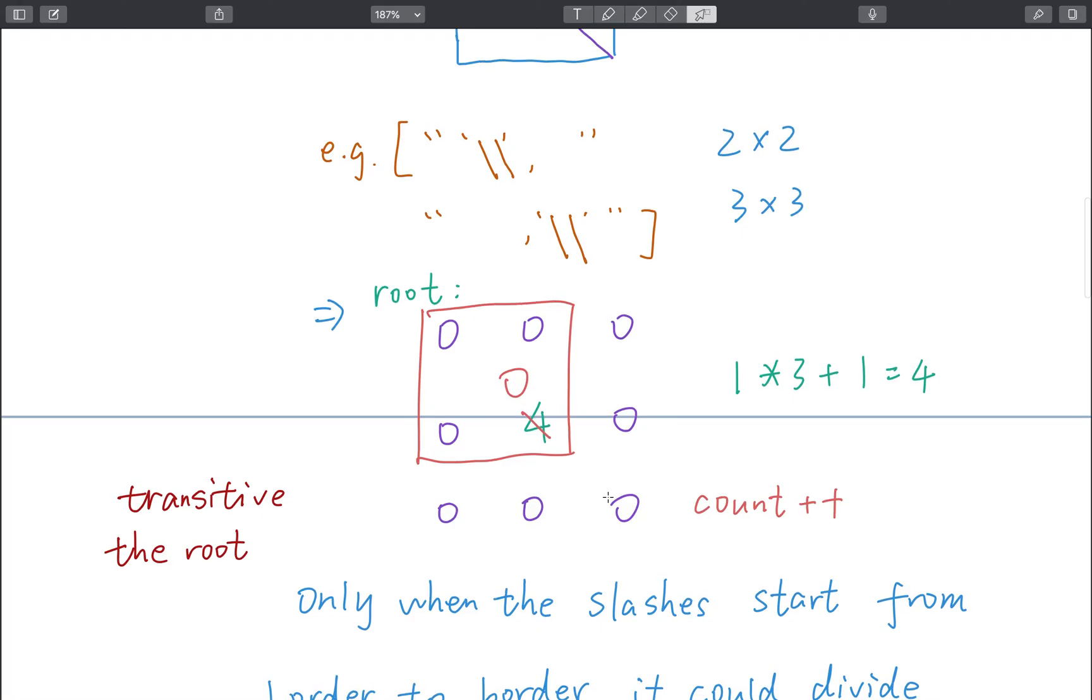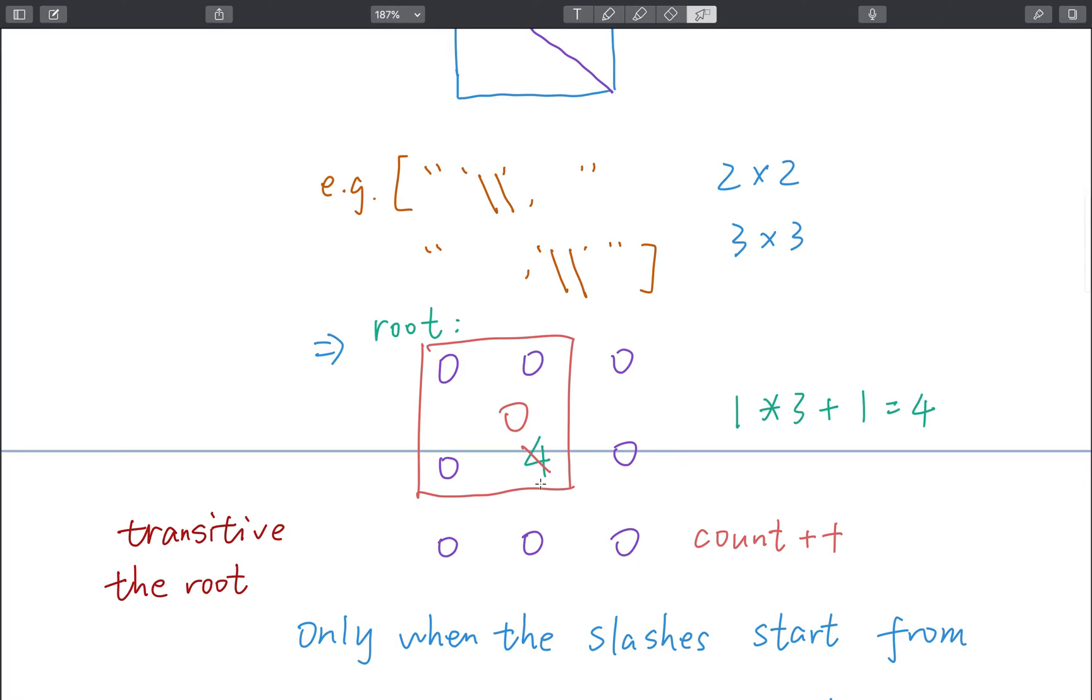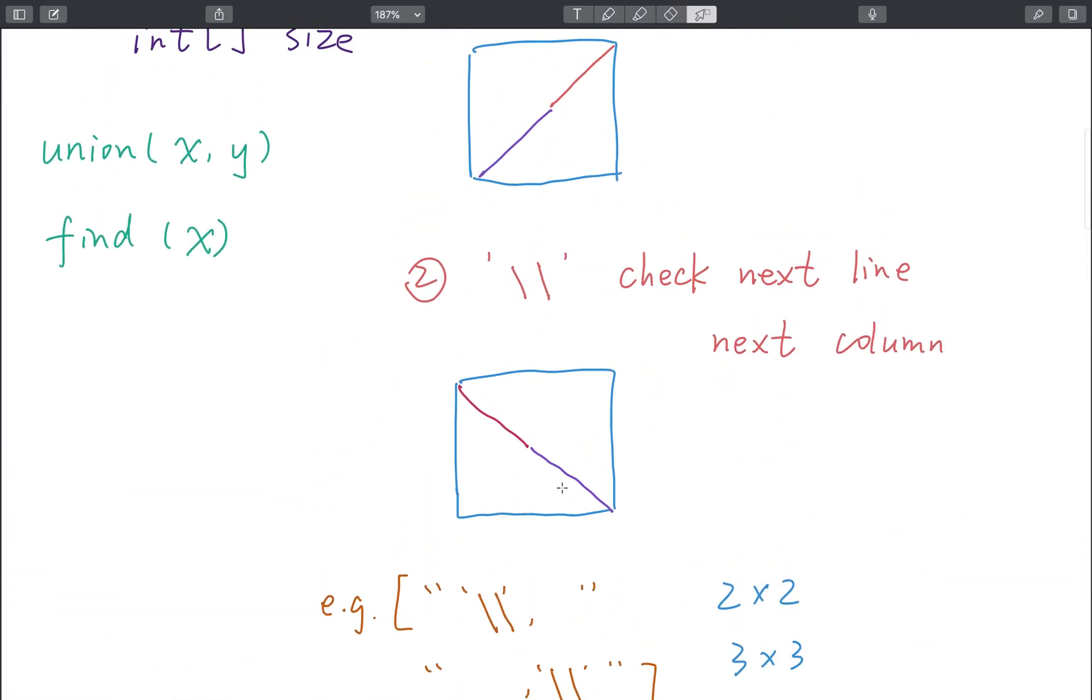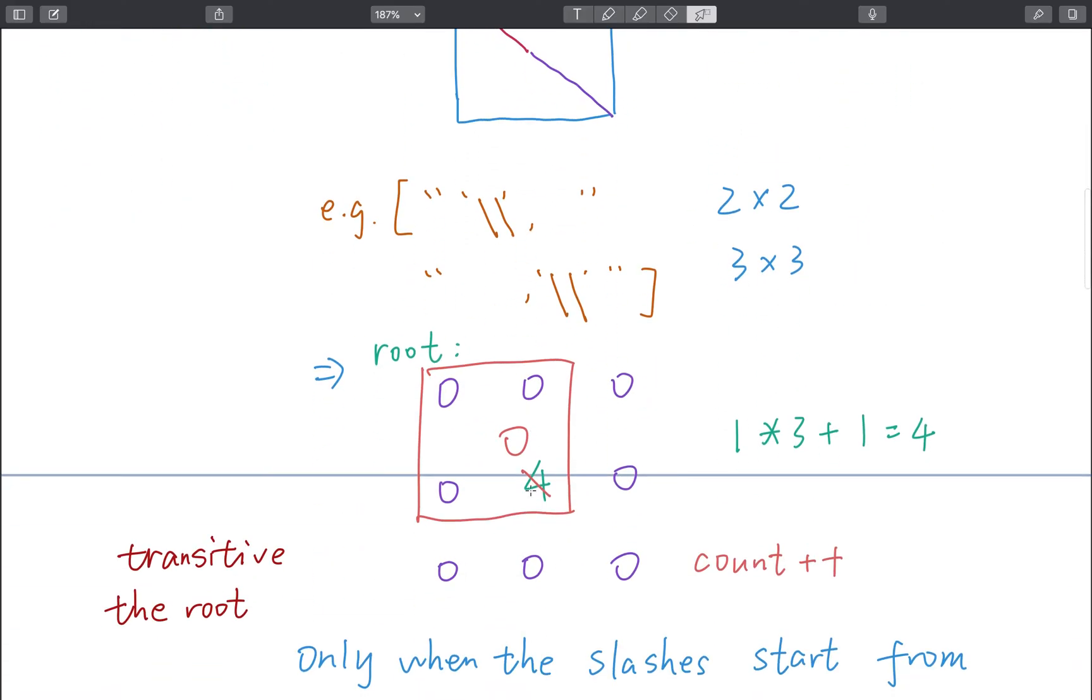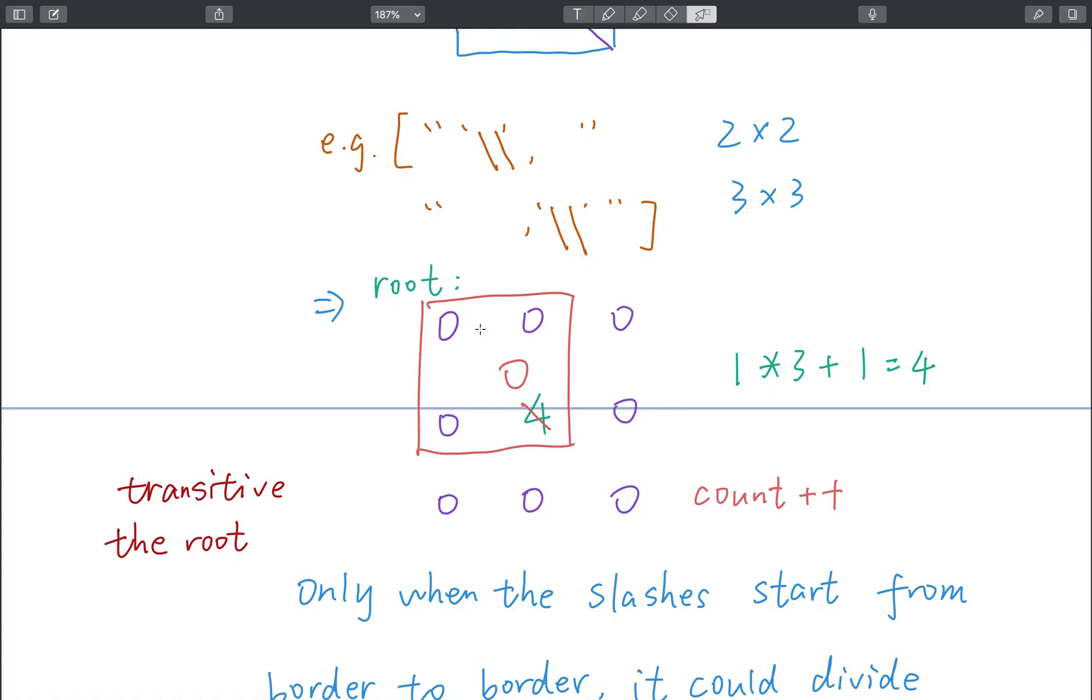It seems we need to set root size equal to n times n, but if we initialize the root to n times n we may have some problems. One thing is that we always need to check whether the index is valid. Like here, we need to check next row, next column, whether the index is valid. Another thing is for the root initialization we may have some issues because we need to know whether they are connecting in the continuous way. If we initialize the root to n plus one times n plus one, we can just initialize all the borders to zero and all the things inside to their own root.